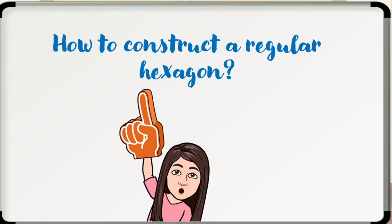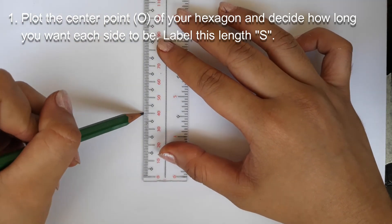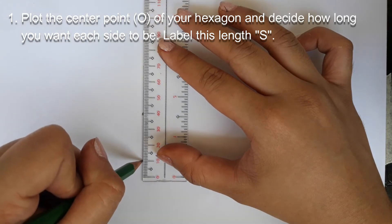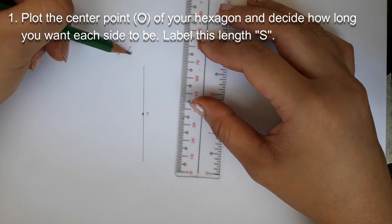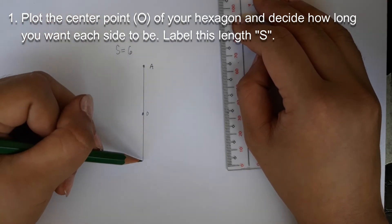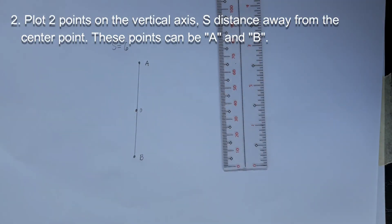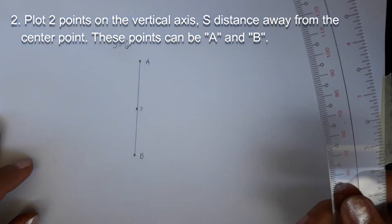And lastly, how to construct a regular hexagon. Here are the steps. Number 1. Starting with the center point and side length. Plot the center point O of your hexagon and decide how long you want each side to be. Label this length S. Number 2. Plot two points on the vertical axis S distance away from the center point. These points can be A and B.